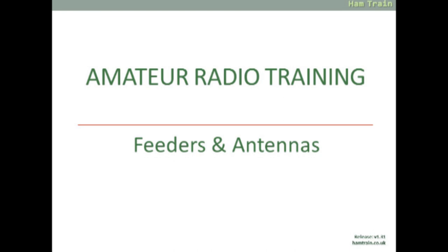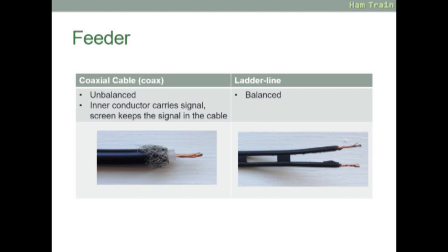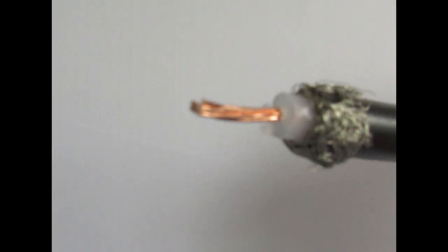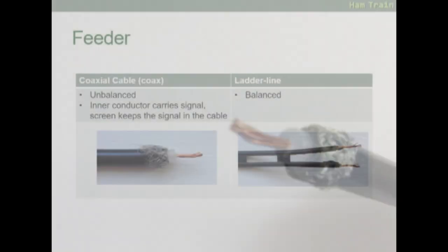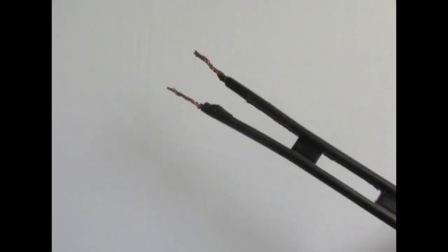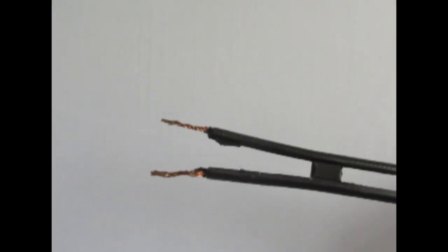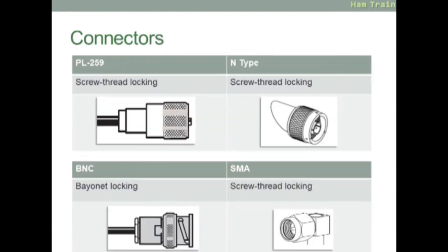The other type of feeders and antennas. There are two types of feeder: there's coax cable, which is unbalanced—the signal is in the middle of the cable with a screen on the outside to reduce interference. The other type is ladder line, which is balanced: two equally spaced strands. There are four connectors you need to know about at foundation. The two large ones are the PL259 and the N-type, both screw thread locking. For smaller connections, there's the BNC, a bayonet connector where you push and twist, and the smaller SMA, which is a screw thread.